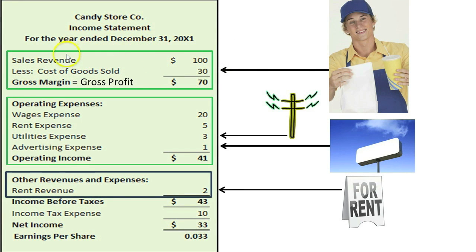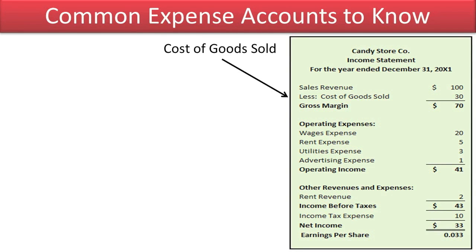Sales revenues represent sales of goods and services to customers, so they are classified as part of gross margin. Cost of goods sold — COGS — reflects the costs that the company incurred to purchase or manufacture the products that were sold to customers, so they are classified with sales revenue as part of gross margin. Gross margin is also known as gross profit.